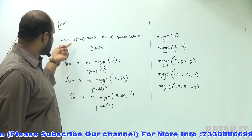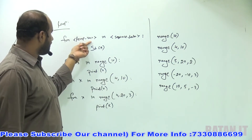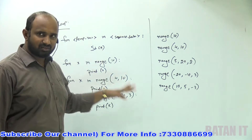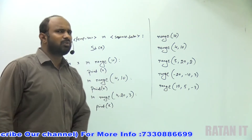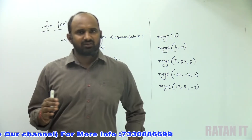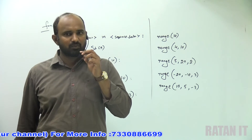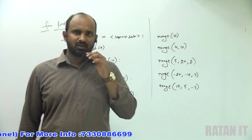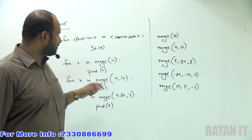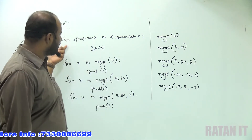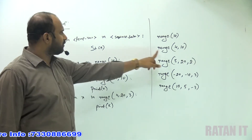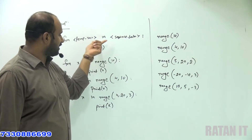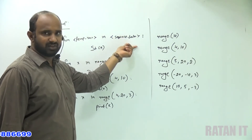This is information about the for loop — for temporary variable in sequence data. We'll do practicals covering these points and check a number of possibilities. The for loop iterates the data: for temporary variable in sequence data.